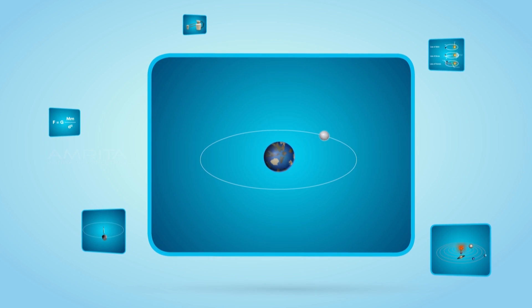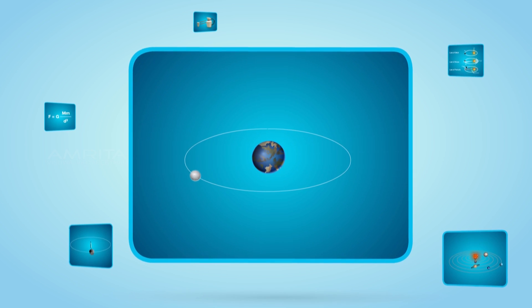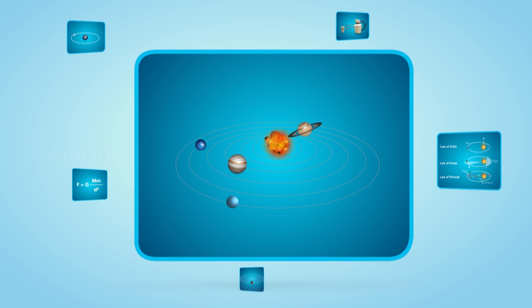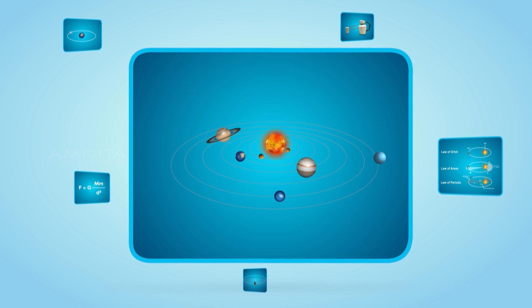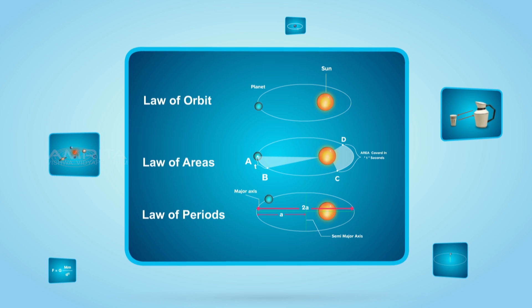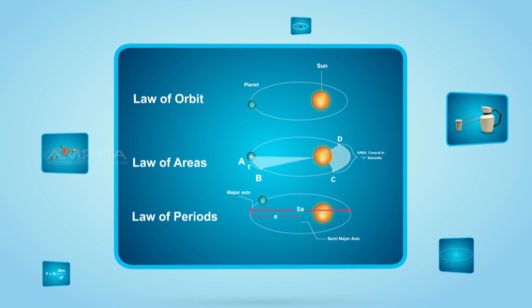Due to the centripetal force, the moon revolves around the earth. In the 16th century, Copernicus proposed a heliocentric or sun-centered universe. Johannes Kepler proposed three laws that describe the motion of planets: law of orbits, law of areas, and law of periods.